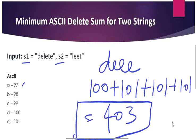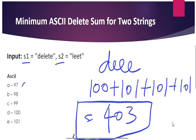How are we going to approach this problem? You can relate it to a problem we have already discussed: edit distance. Edit distance tells us how many operations we perform to transform S1 to S2. Here it is the same idea — we transform S1 to S2, but instead of counting operations, we calculate the ASCII sum. The algorithm is pretty similar; check the link in the description to learn more.